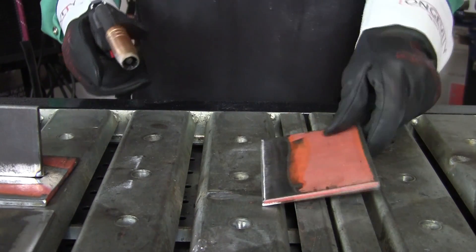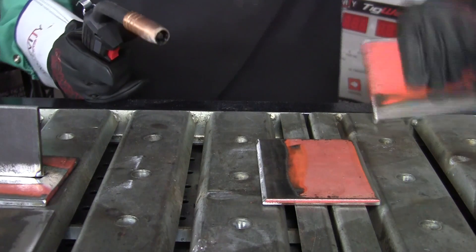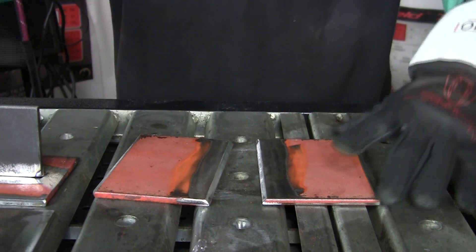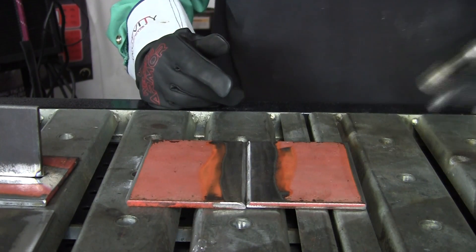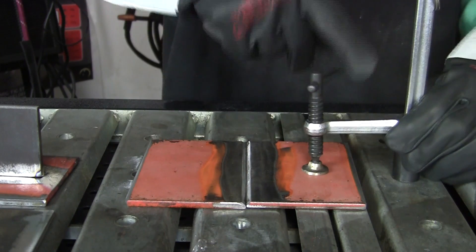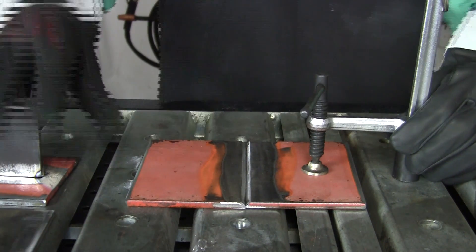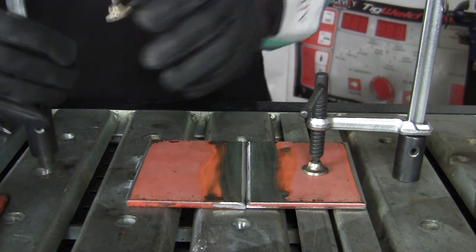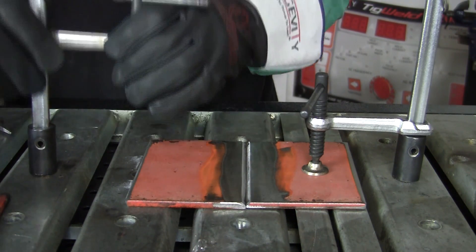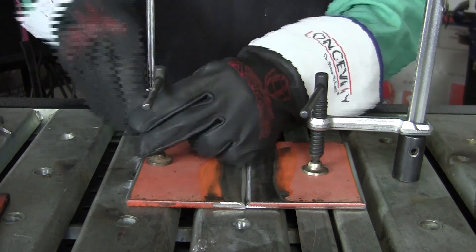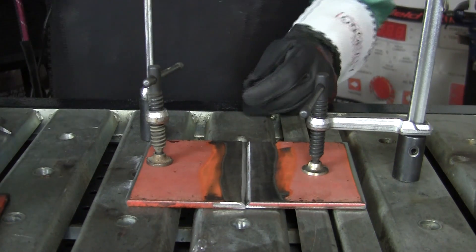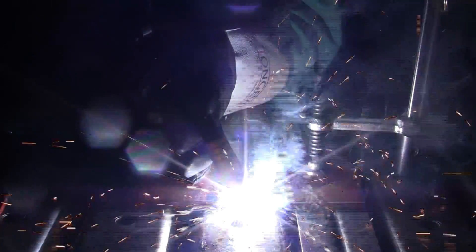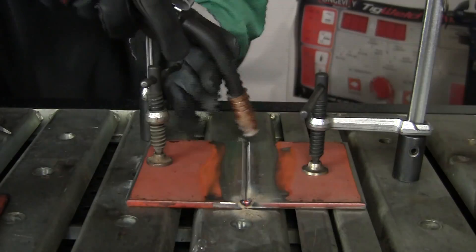Then we take our butt welds with the beveled side. Now this, you want to clamp it down just to hold it down just a little bit. Just like that. That just keeps it from bending up. Then tack it.